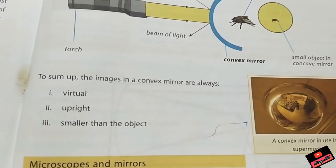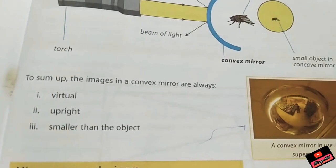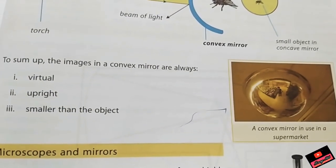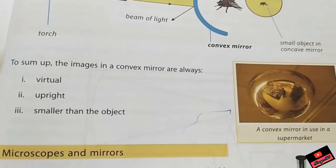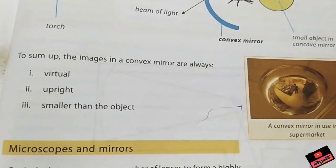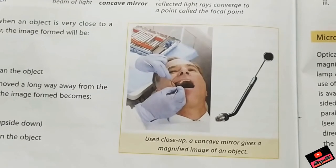A convex mirror makes a big object a smaller one. So from a convex mirror in the supermarket, you can see many people, you can see the image of many people in just one mirror.